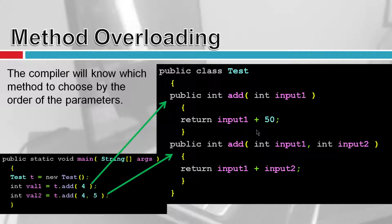You can also have one parameter but pass in a string or a double — you could create another 'add' function that takes a double input and does something different. Note that just changing the return value does not change the signature. If you put 'public double add(int input),' the compiler would complain because the return type is not part of the method signature. When you overload a function, you're only changing the order, types, and number of inputs coming into the function.